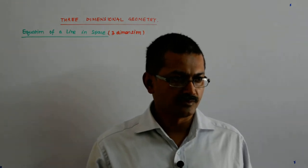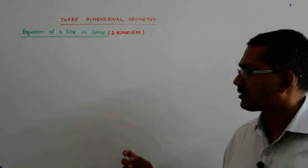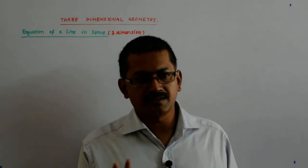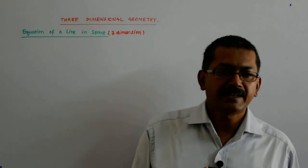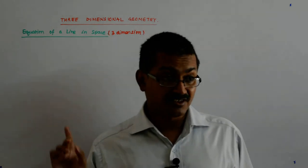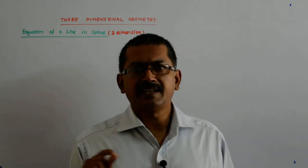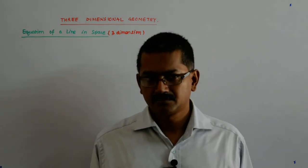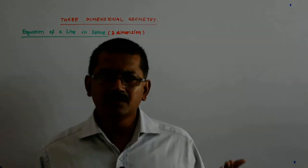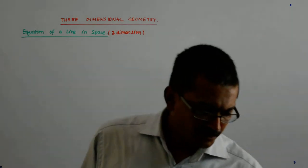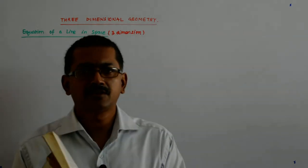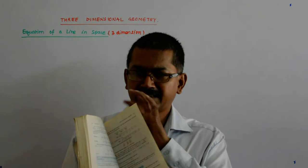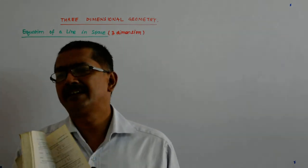Only 3D things can occupy a volume. For example, this board — not the whole board because it has some thickness, but just the surface — is not occupying any volume. The board itself, anything you see around you, if you can see it, it has to be 3D. It is quite another matter that you ignore the thickness and say it is 2D. For example, this page may be considered 2D because its dimension of length and breadth is large compared to its thickness, which is very, very small.